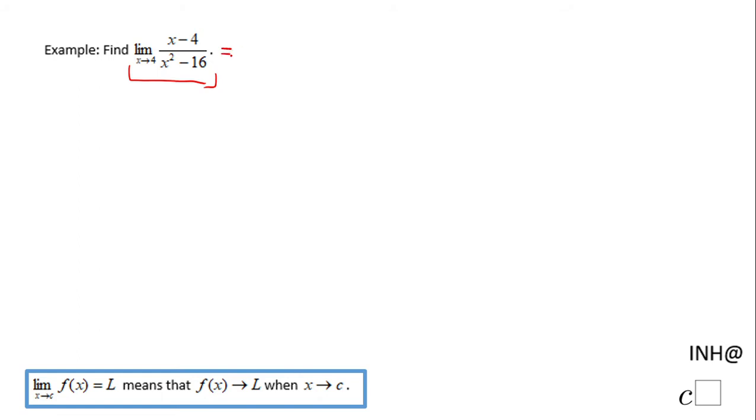We get 4 - 4 which is 0, that's not a problem. And here we have 4² - 16, that will be the problem because we end up with something that we cannot evaluate: 0 / 0. It's an undefined form, so we have to find something else to find this limit.